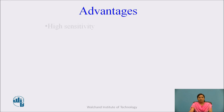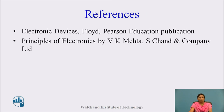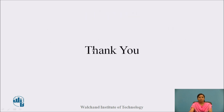The advantages of the photodiode include high sensitivity and large gain. The disadvantage is that it generates a higher level of noise than the PN photodiode. Thank you.